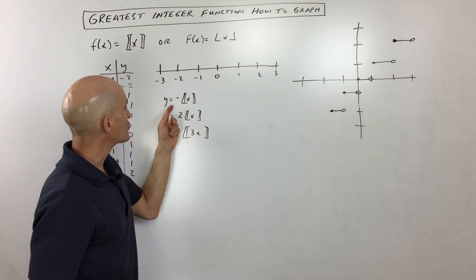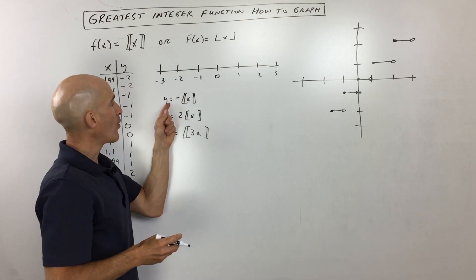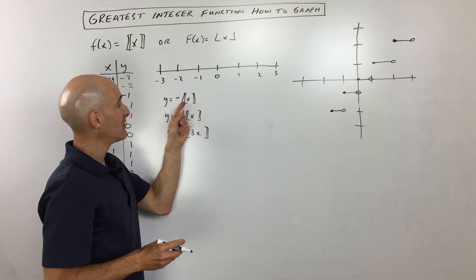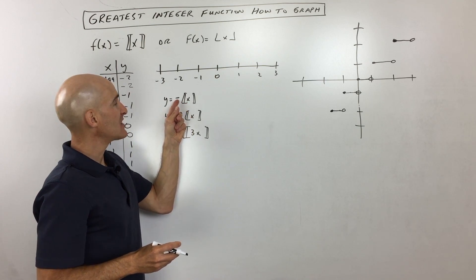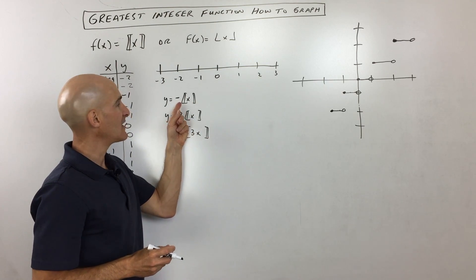But let's look at some other variations. So somebody was asking me on another video that I did, what happens if you have like y equals negative greatest integer of x? Well, you see this negative. What do you think that does to the graph? These are called transformations.